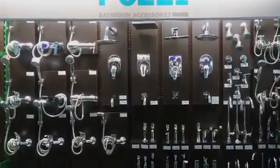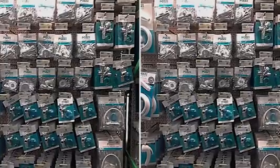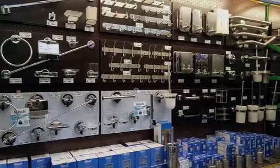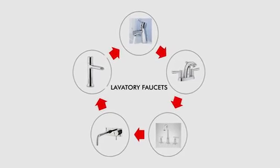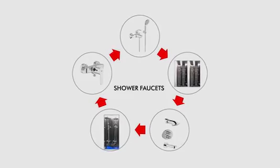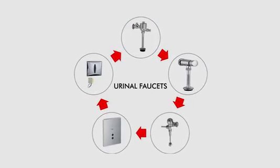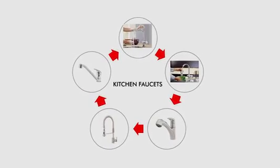Kaya dito sa plumbing section ay aalamin natin ang iba't-ibang klaseng faucets, plumbing fittings, at ang basic types ng bathroom accessories. Ngayon ay aalamin natin ang iba't-ibang klaseng mga faucets katulad ng laboratory faucets, shower faucets, bathtub faucets, urinal faucets, at kitchen faucets.